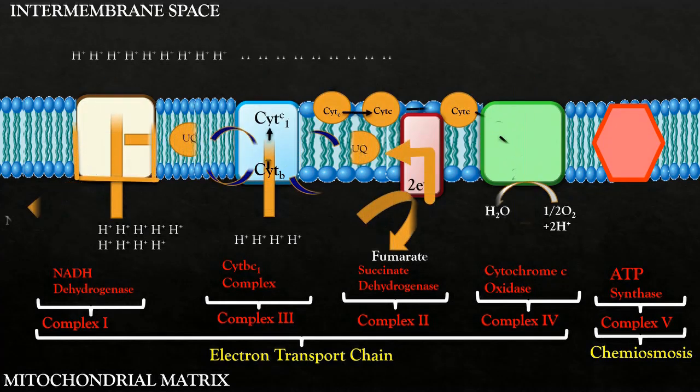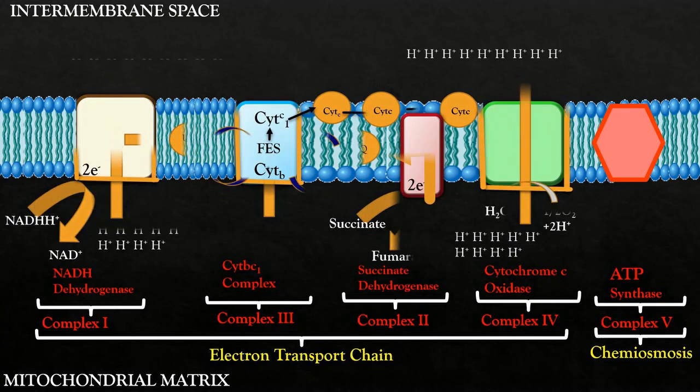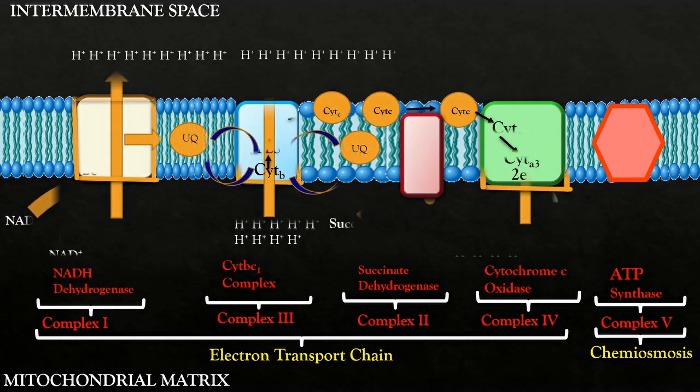Intermembrane space is now laden with protons. At this stage, complex 4 needs to pass electrons to final electron acceptor. The final electron acceptor is oxygen, which on receiving electrons splits into two oxygen ions and protons are added creating two water molecules.